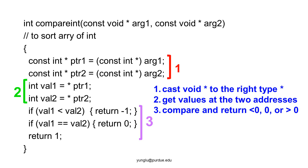This step is necessary because different types have different sizes. If an address is a pointer to an integer, 4 bytes will be read from that address. If an address is a pointer to a double, 8 bytes will be read. This example shows how to write a comparison function for an array of integers. The first step casts the arguments to pointers of integers. The second step uses the right-hand side rule to read the values at the addresses. The third step compares the two values and returns a negative integer, 0, or a positive integer.